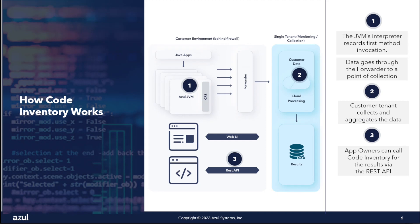The way Code Inventory works is we've repurposed the JVM's bytecode interpreter so that the very first time it calls a method, it makes a log of that. That information is sent off-site to be aggregated across all the nodes, all the virtual machines, all the containers where this application runs, building up a collection of aggregate data to summarize whether you used a method over the course of running the application. If you haven't used a method in six months or a year, it's probably time to clean that code up before your next Java upgrade.